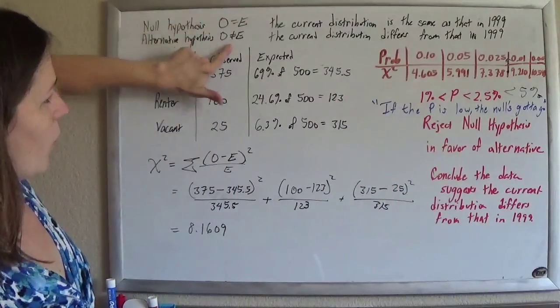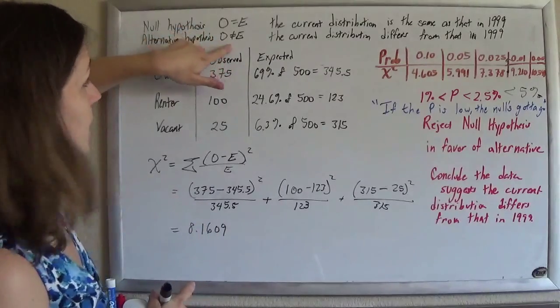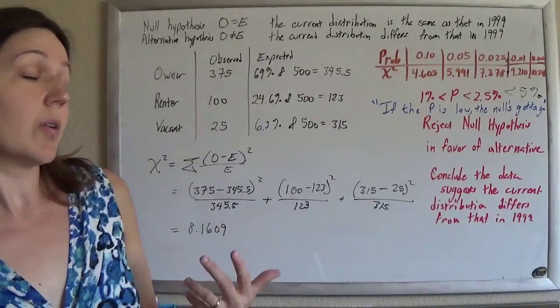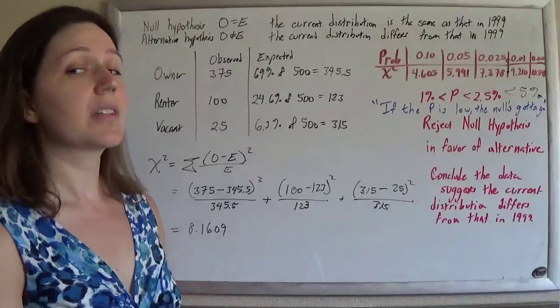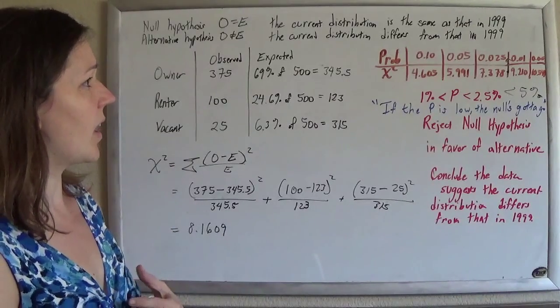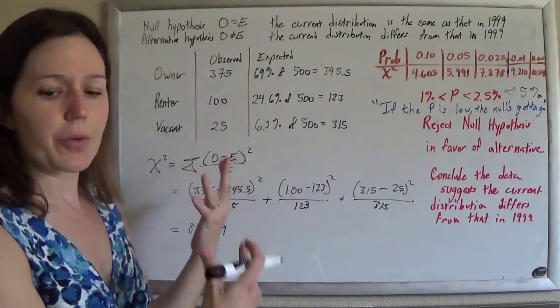So this is not true, so it's in favor of the alternative hypothesis, so we conclude that, yeah, the current distribution is different from that in 1999. And that's all you write out.